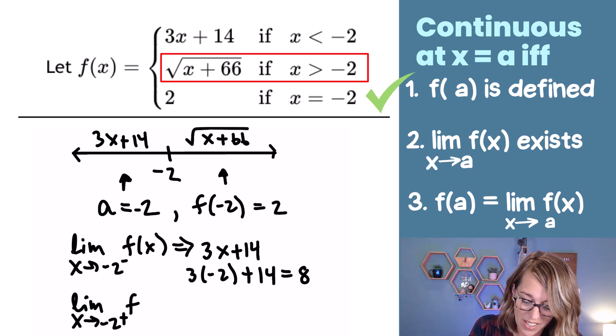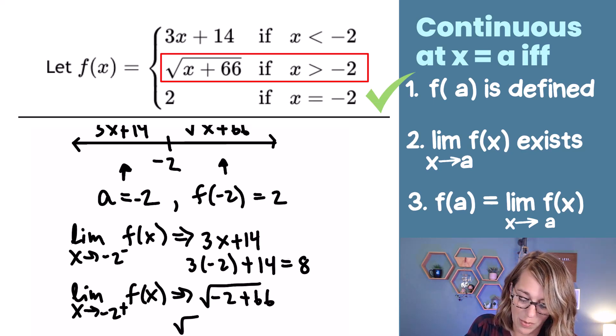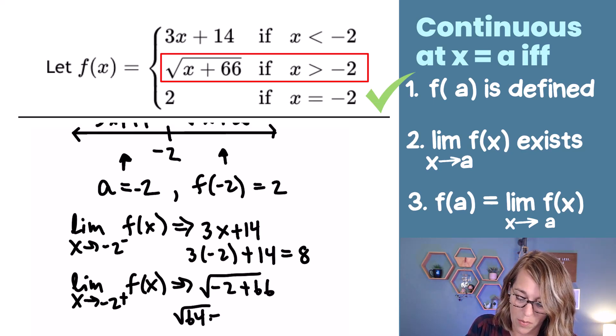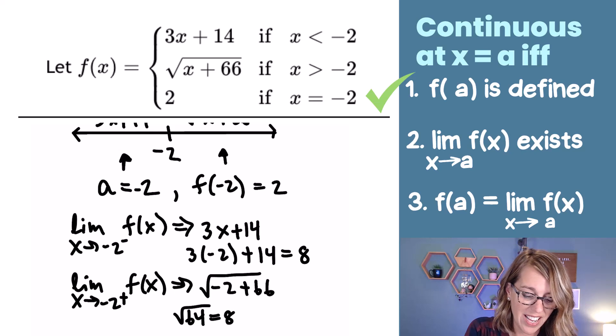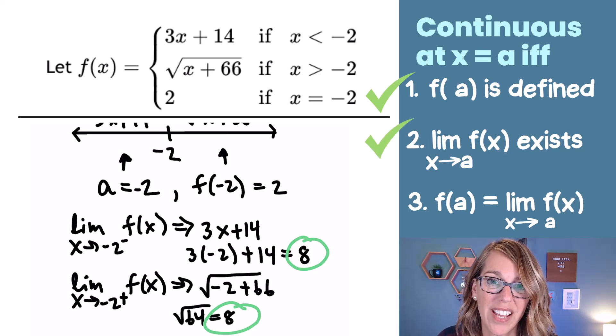So as I put this limit together, I can go ahead and use that square root x plus 66. This is negative 2 plus 66. That's the square root of 64, which is equal to 8. So I have satisfied that second condition. The limit does exist as we're approaching negative 2.